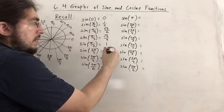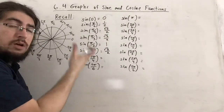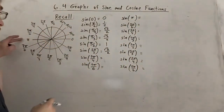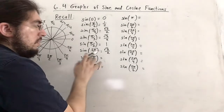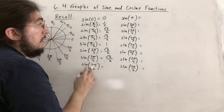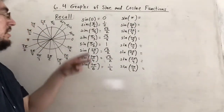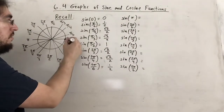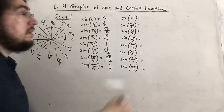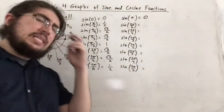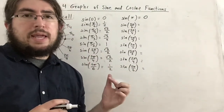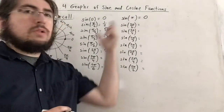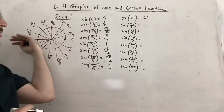So 2π/3 is in the second quadrant — sine is positive there — and the reference angle is π/3, so sine of 2π/3 is radical 3 over 2. Similarly for 3π/4 and 5π/6. Sine of π is zero because the y-value there is zero. In fact, any integer multiple of π gives sine equal to zero, because they all refer back to 0 or π on the unit circle.